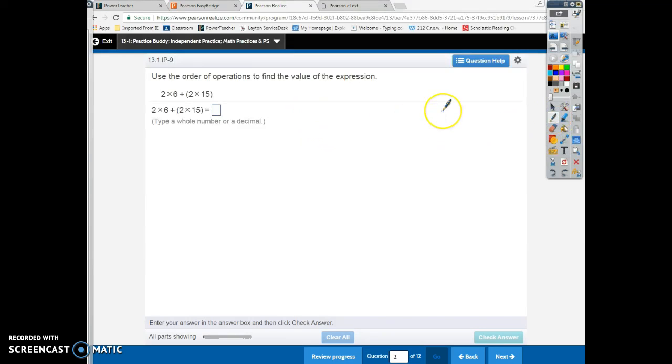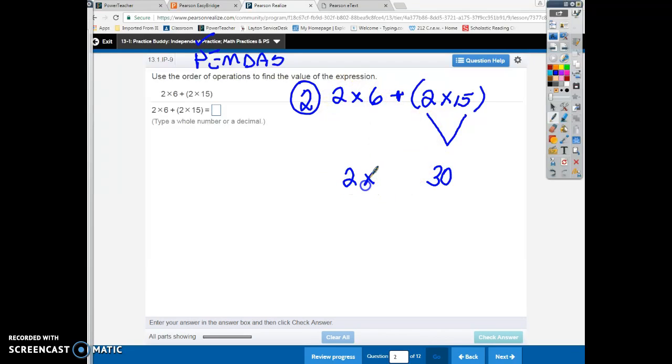So again, in your notebooks, you want to solve and write this down. We're going to go problem number two. Put a circle around it. And I want to copy this in my notes. Now, according to the order of operations, P stands for parentheses. I have to do this in parentheses first. Even if that was an addition sign, it's still in my parentheses first. I have to solve that one first. Two times 15 is 30.